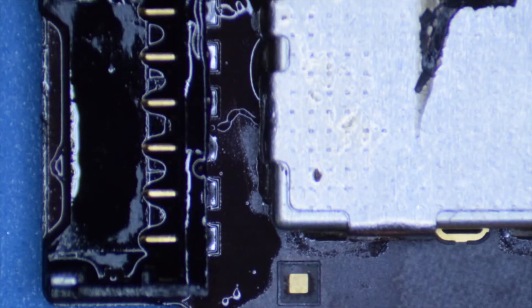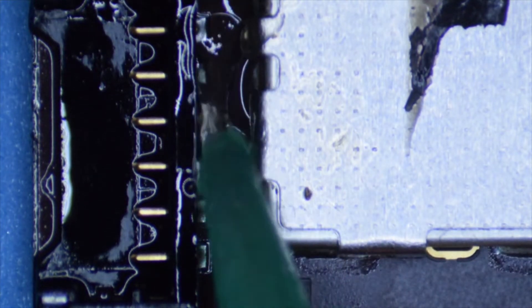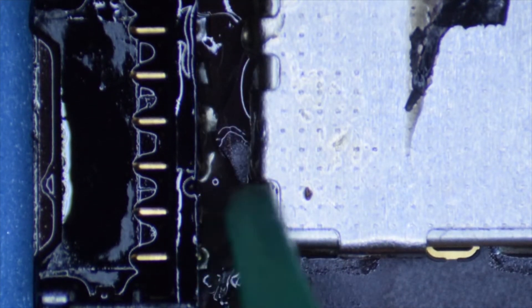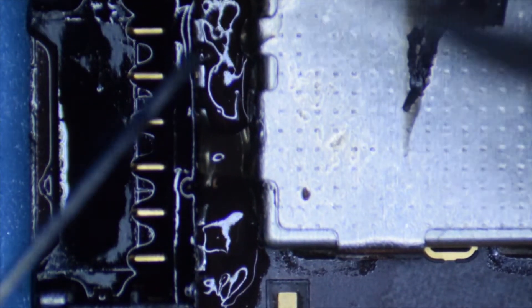and we're just going to go in and flow solder thoroughly through these joints so that we have a good connection. We won't have to worry about this cracking or popping off the board later on.